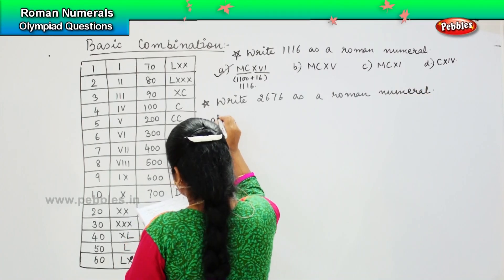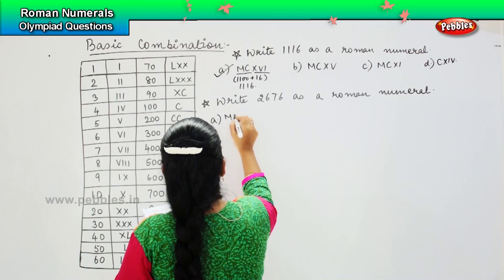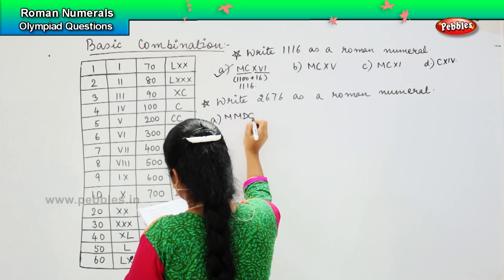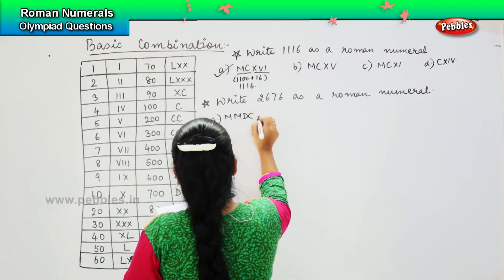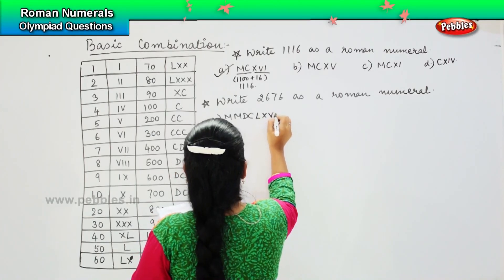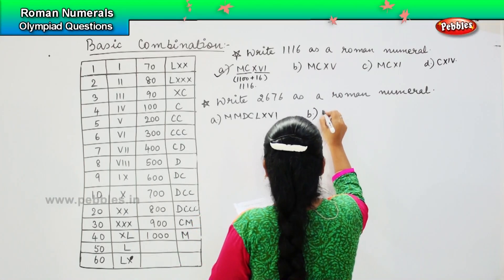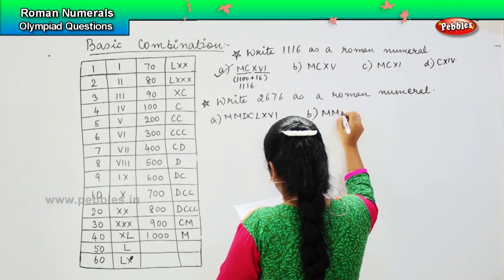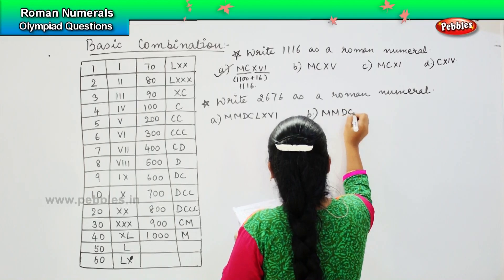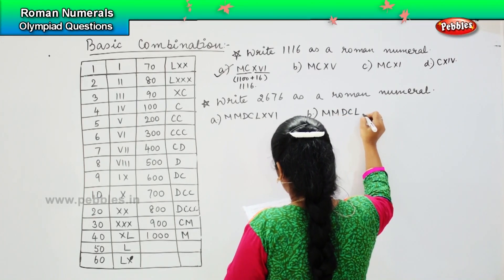And your options are: option A, MMDCLXVI; option B, MMDCLXXVI.